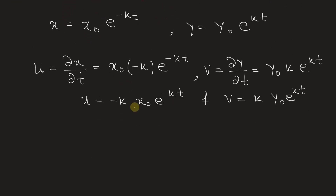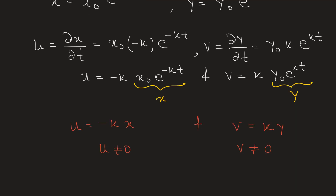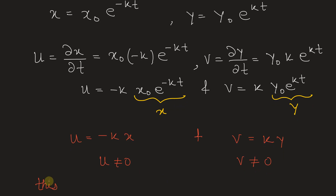Observing closely, the expression x-naught e to the power of minus kt equals x, and y-naught e to the power of kt equals y. Therefore, u equals minus k times x, and v equals k times y. Since neither u nor v equals zero, this is a two-dimensional flow.